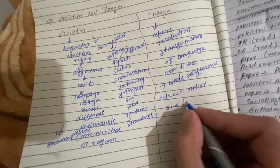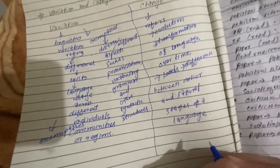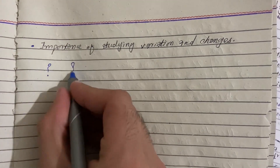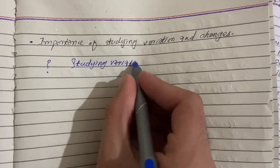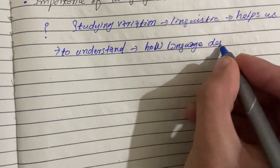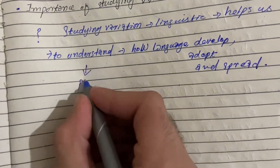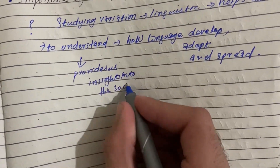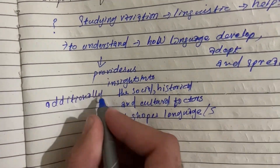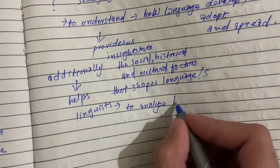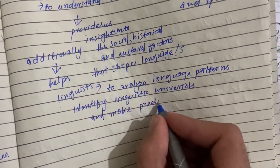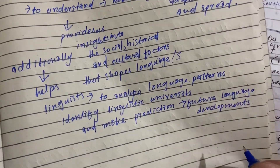Studying variation and change in linguistics helps us understand how languages develop, adapt, and spread. It provides insights into the social, historical, and cultural factors that shape languages. Additionally, it helps linguists analyze language patterns, identify linguistic universals, and make predictions about future language developments.